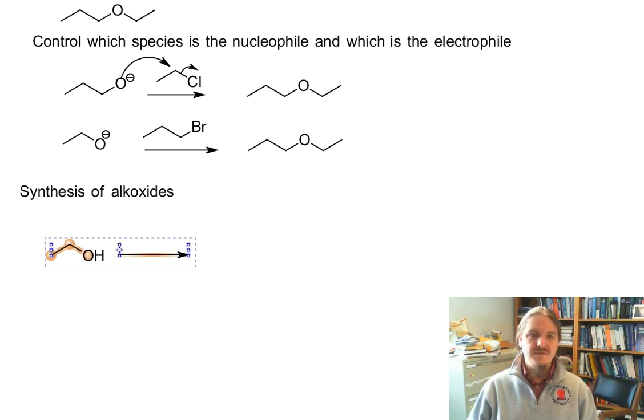One of them uses a base. These alcohols have pKa's in the range of 15 to 18. So there are a lot of things that are basic enough to deprotonate the alcohol and make the alkoxide anion.